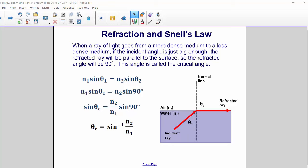When a ray of light goes from a more dense medium to a less dense medium, if the angle is just big enough, the refracted ray will be parallel to the surface, so that the refracted angle will be 90 degrees. This angle is called the critical angle.